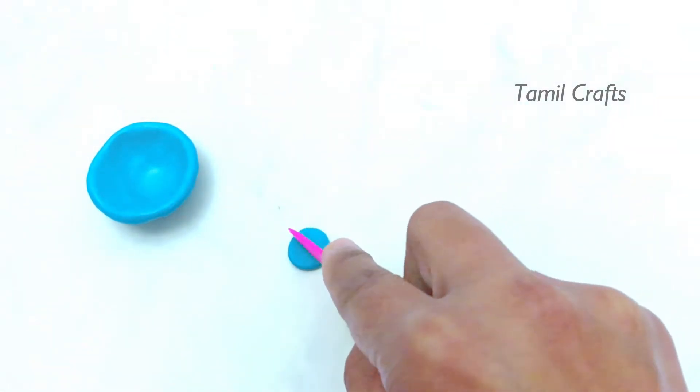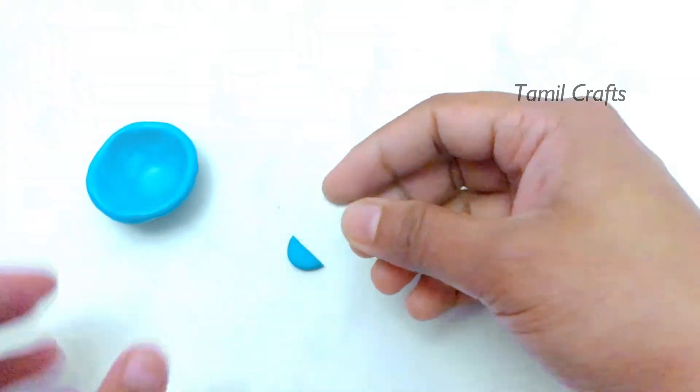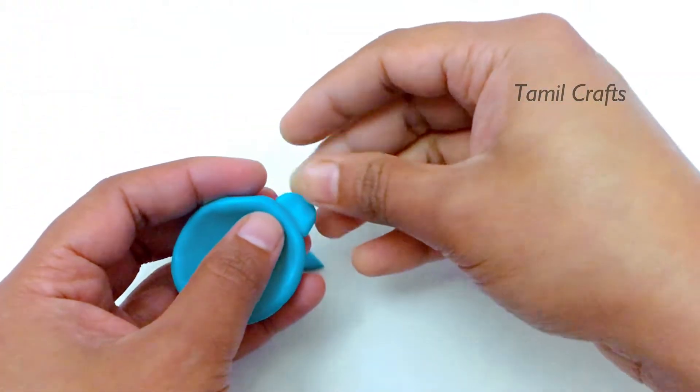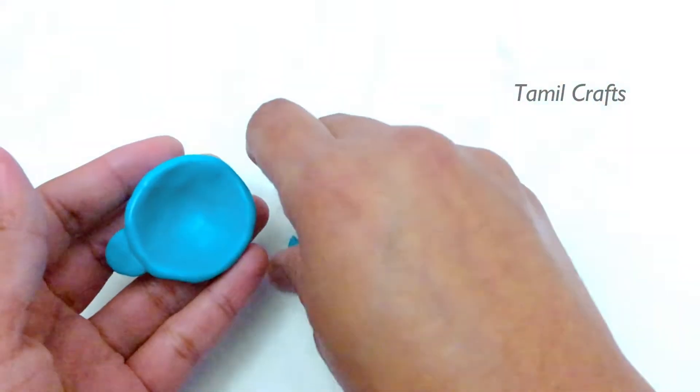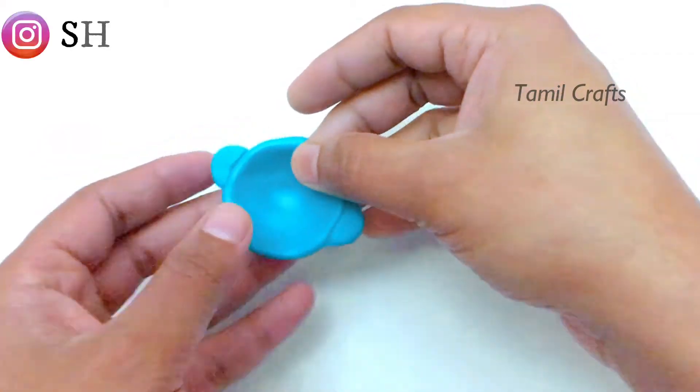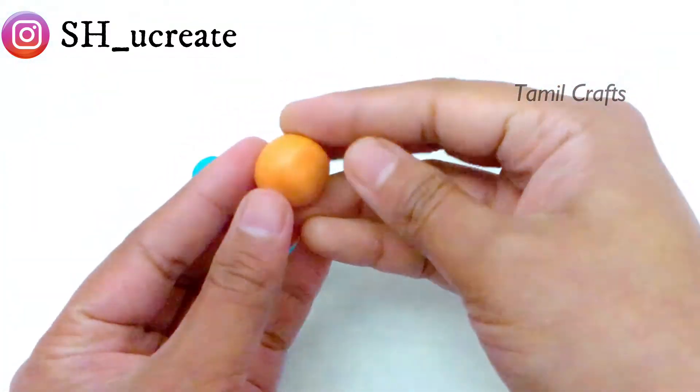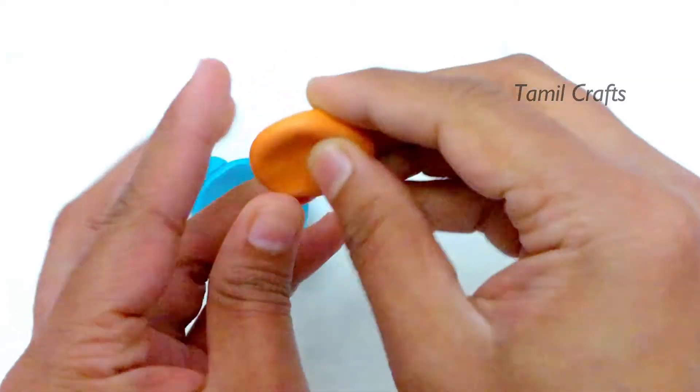Set the clay pieces. Cut the clay. This will be the opposite side. This will be ready with three colors. Now use orange color.